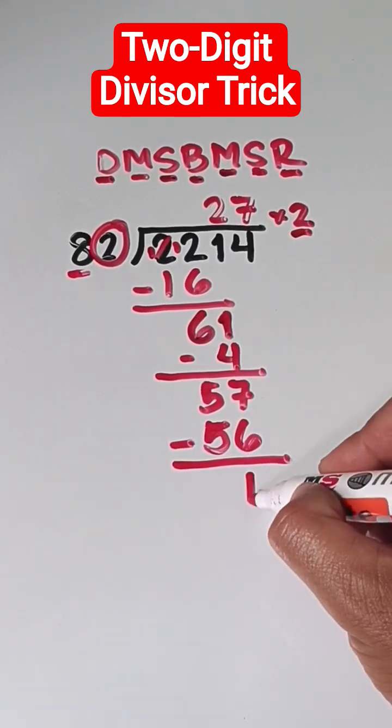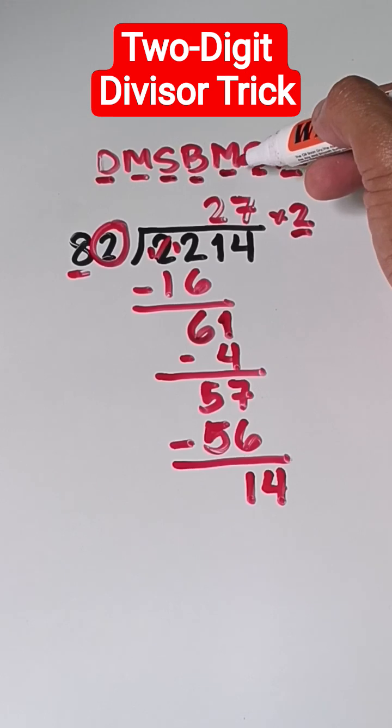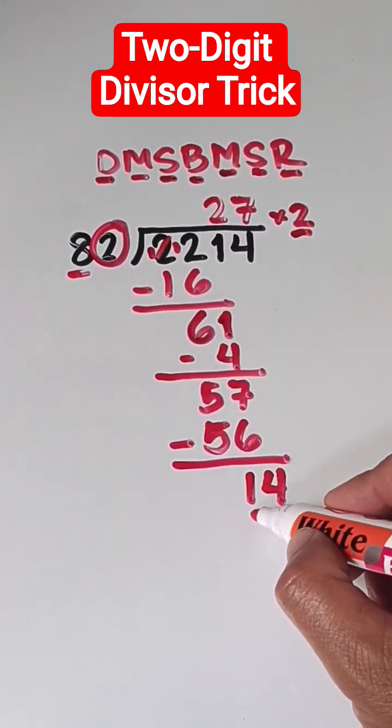Then, subtract. 7 minus 6 is 1. And then, bring down the last digit, 4. And then, multiply. 7 times 2 is 14.